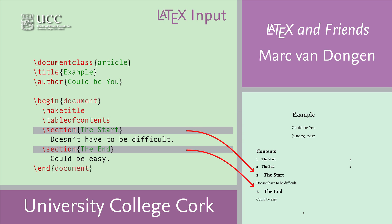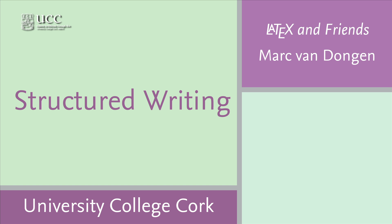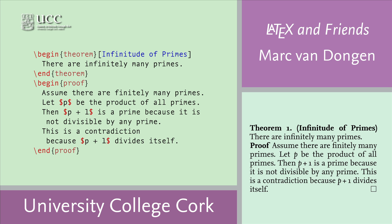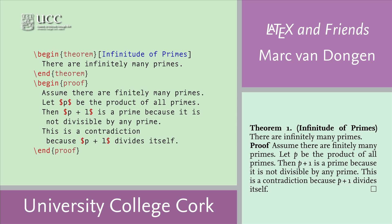Using special markup commands, you indicate the start of the sectional units of your output document, and LaTeX will automatically number them for you. The rest of the input file determines what's in the main body of your output document. One of the advantages of LaTeX is that it forces you to focus on the content of the document, not on the style. For example, a mathematician writing a theorem will write it in a dedicated theorem environment in the input file, which determines the style of the theorem in the output file.